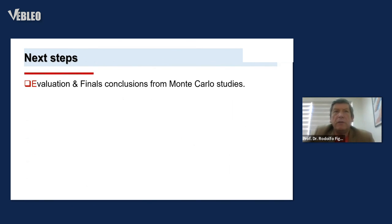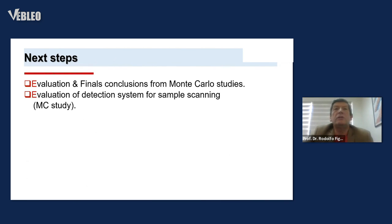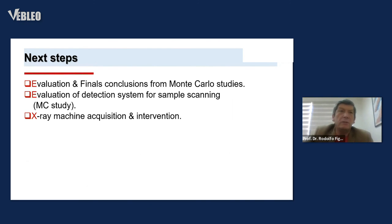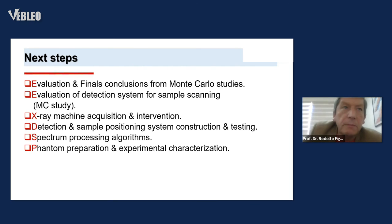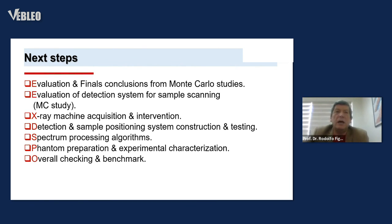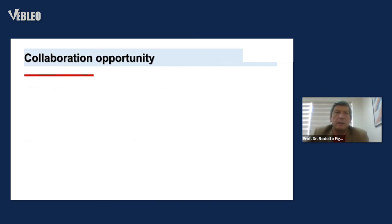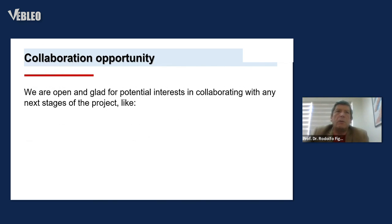The next steps: evaluation of final conclusions from Monte Carlo study, evaluation of the detection system for sample scan, X-ray machine acquisition and intervention, detection and sample position system construction and testing, spectrum processing algorithms, phantom preparation, experimental characterization, cross-checking and benchmarking.